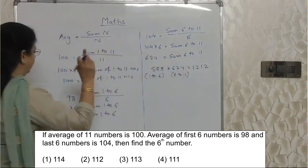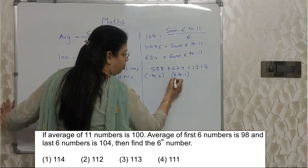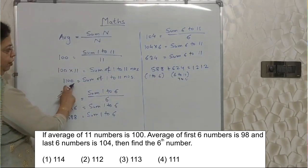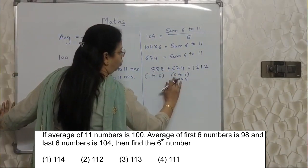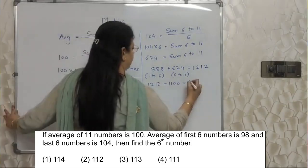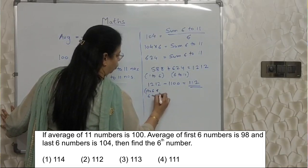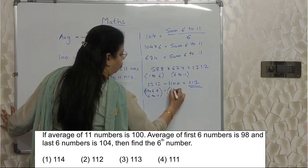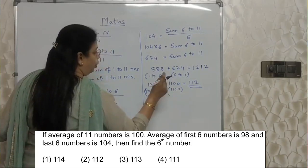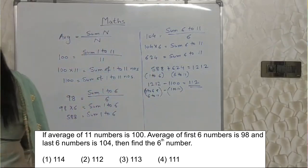From this sum, if we subtract the sum of 1 to 11 — which is 1100 — we will be left with just the 6th number, because 6 appears twice in the addition of 1-to-6 and 6-to-11, but only once in 1-to-11. So 588 plus 624 minus 1100 gives us 112. The answer is 112, which is the 6th number.